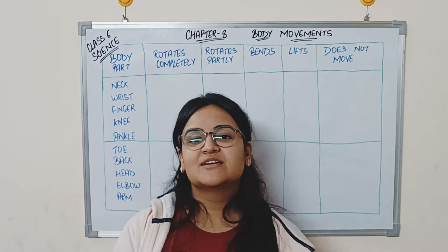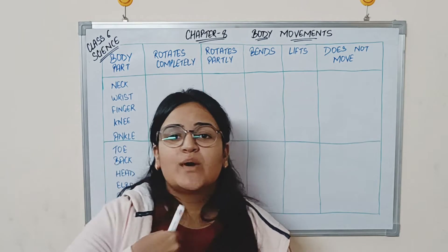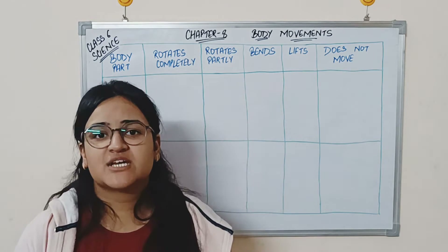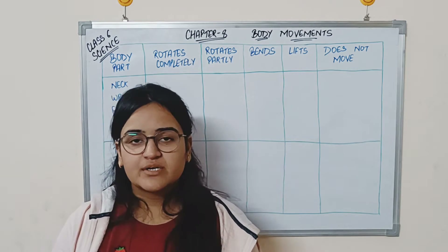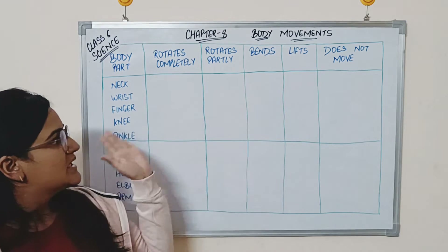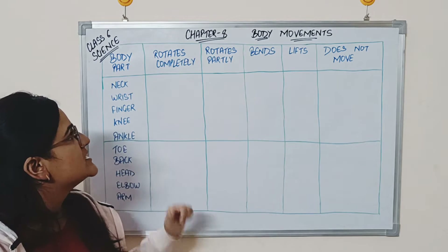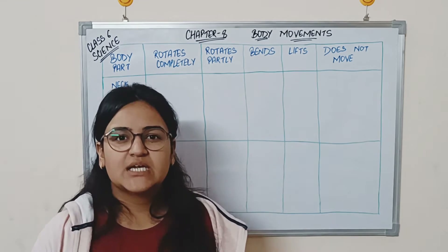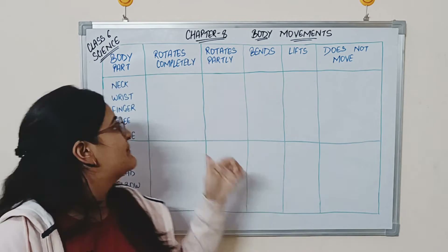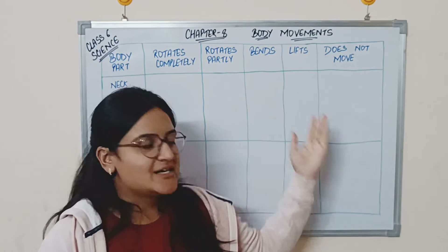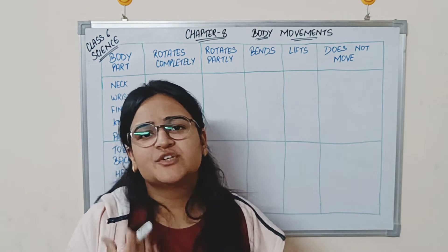Hello guys, so we are done with the modes of movement. In this next part of chapter 8, Body Movements, we are going to go forward with Table 8.2. We are basically going to study which body parts of us humans rotate completely, rotate partly, bend, lift, or do not move at all.